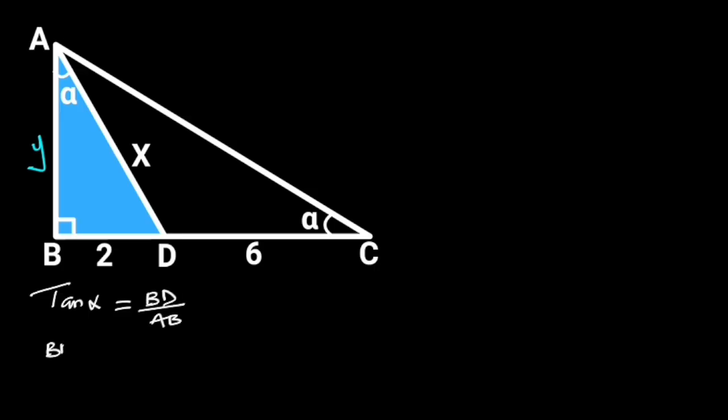BD is equal to 2, AB is equal to Y. It follows that tan alpha is equal to 2 over Y. Let this be equation 1.